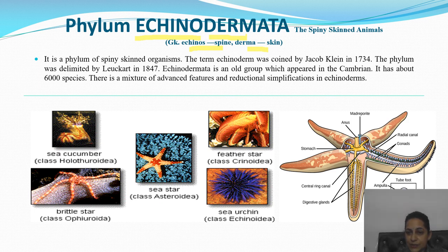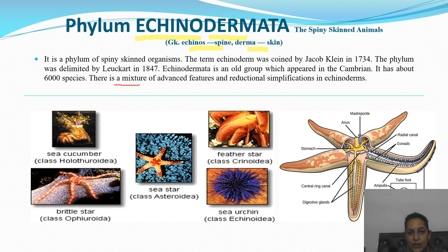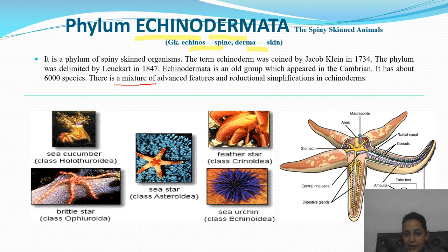The phylum was delimited by Leuckart in 1847. Echinodermata is an old group which appeared in the Cambrian period. It has about 6,000 species. There is a mixture of advanced features and simplifications in echinoderms. Examples include sea cucumber, brittle star, sea star, feather star, and sea urchin.